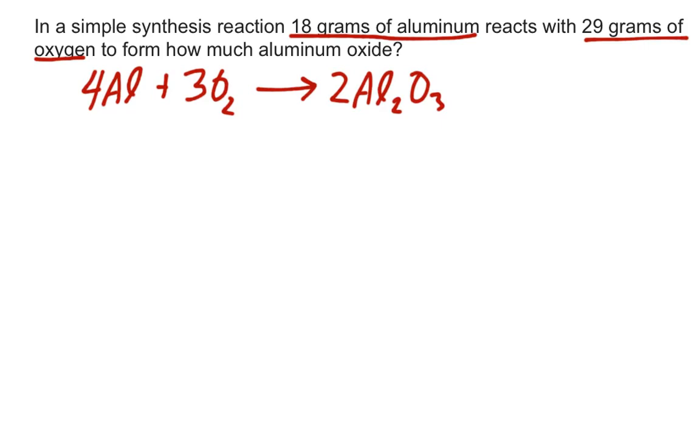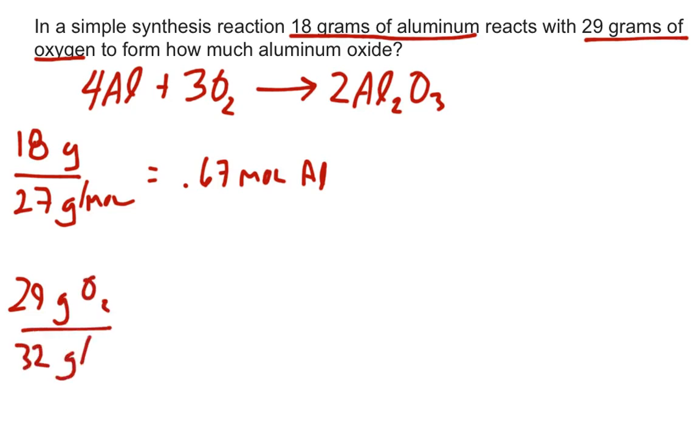Well, to go from grams into moles, we're simply going to divide by our molar mass. 18 grams divided by 27 grams per mole means we're going to have 0.67 moles of Al. Perform the same function with oxygen and we have 29 grams of oxygen divided by 32 grams per mole. 29 divided by 32 is 0.90625.